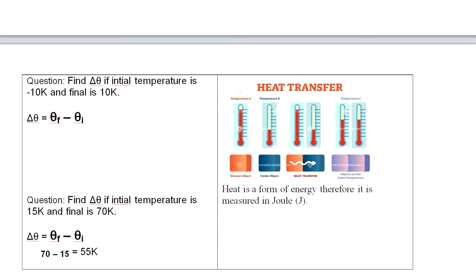Before starting the next topic, I want everyone to solve the question in front of you. I have solved one as an example. For question 2: find the temperature difference if the initial temperature is 15 K and the final is 70 K. Applying the formula Δθ = θF − θI gives 70 − 15 = 55 Kelvin. This can also be asked using degree Celsius, as the examiner will use degree Celsius in GCSE O-levels.